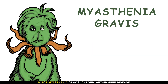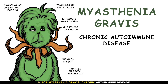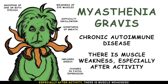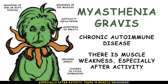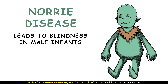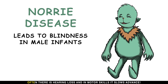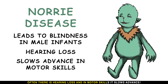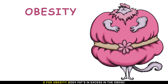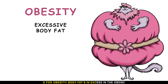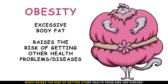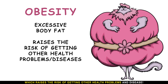M is for myasthenia gravis, a chronic autoimmune disease causing muscle weakness especially after activity. N is for Norrie disease, which leads to blindness in male infants; there is often hearing loss and slowed advancement in motor skills. O is for obesity — excess body fat raises the risk of other health problems and disease.